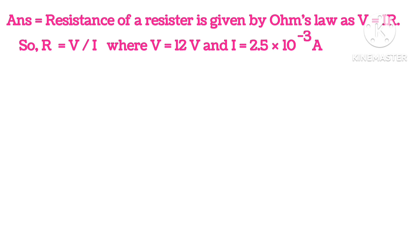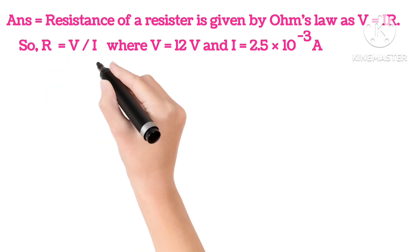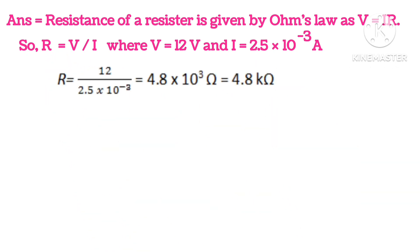We know V is 12V and I is 2.5 into 10 to the power minus 3. So putting in the values, we get resistance 4.8 kilo ohm.